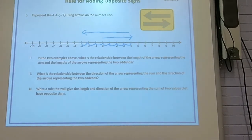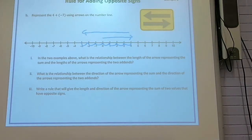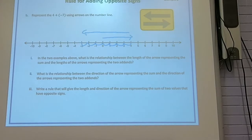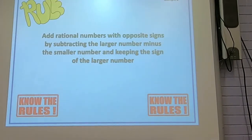What's the relationship between the direction of the arrow representing the sum and the direction of the arrows representing the two addends? The direction of the arrow representing the sum has the same direction as the arrow of the addend with the bigger absolute value. So write a rule: the length of the arrow of the sum is the difference of the absolute values of the two numbers, and the direction is the same as the direction of the longer arrow.